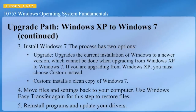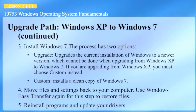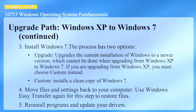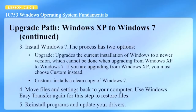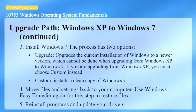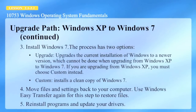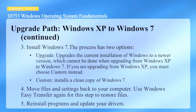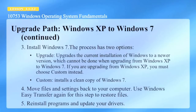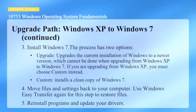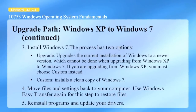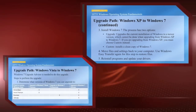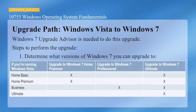Continuing the upgrade path from Windows XP to Windows 7, the next step is to make a choice: upgrade or custom install. With XP there's no upgrade option — you have to do a clean install. If you're installing from Vista, you can do an upgrade. Then you'll move your files and settings back to your computer using the Windows Easy Transfer wizard, and you'll have to reinstall all your programs and device drivers.